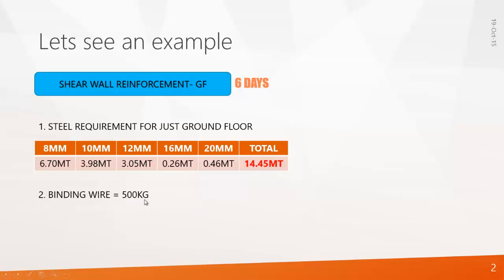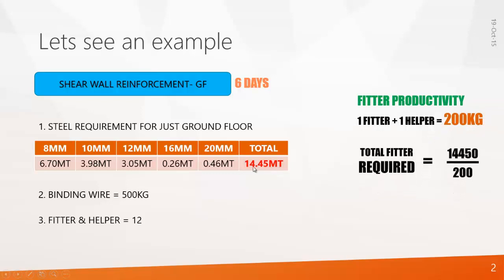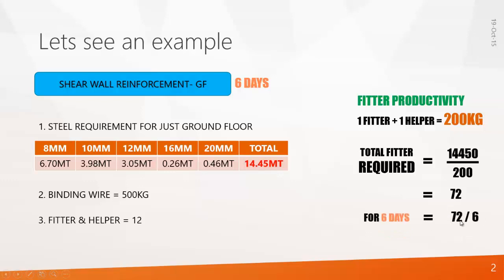I arrived at this calculation based on productivity, and we require 12 fitter and helper. It's based on productivity: 1 fitter and 1 helper can give an output of 200 kg per day. So to perform 14.45 metric ton of steel, we require 14,450 kg divided by 200, that gives you 72 fitter and 12 helper per day. So for 6 days, we require 72 divided by 6, that makes 12 fitter and 12 helper. So this is the calculation.